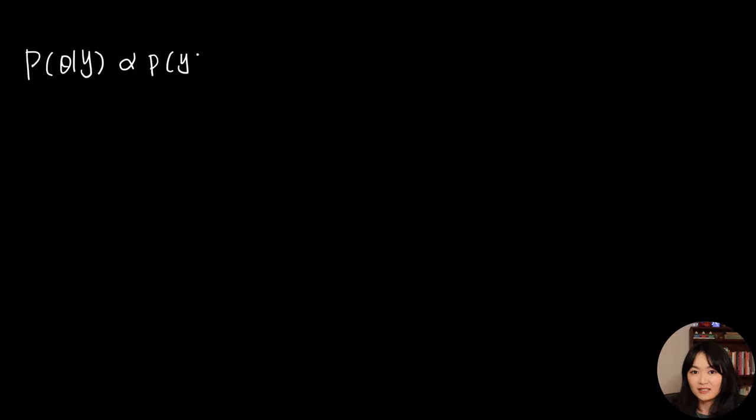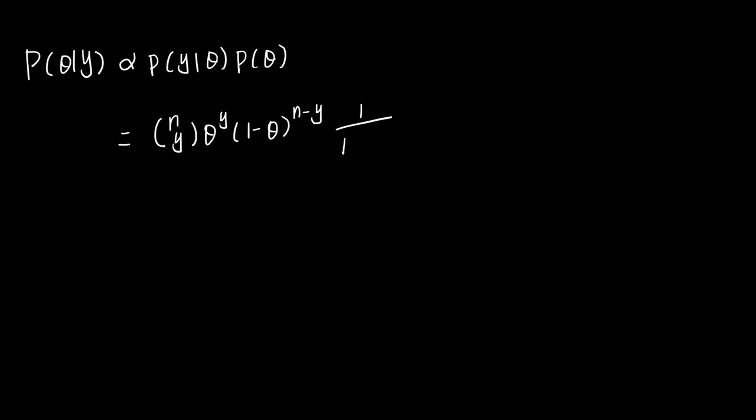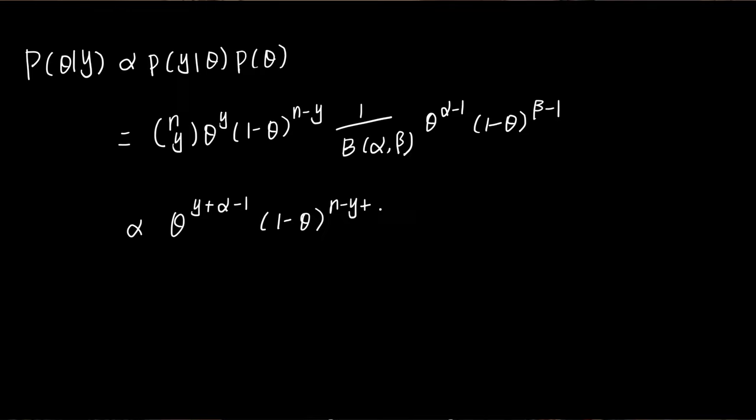And then we can write down the equation for the binomial distribution and the beta distribution, which is then proportional to theta to the power of y plus alpha minus 1 times 1 minus theta to the power of n minus y plus beta minus 1, which is proportional to beta of y plus alpha and n minus y plus beta.